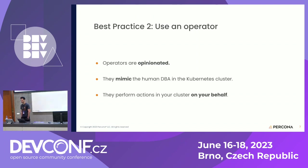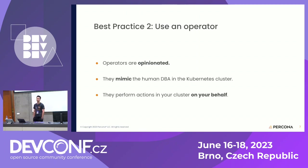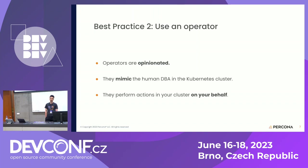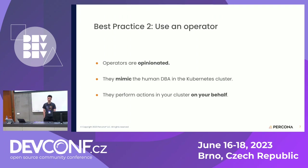You could argue every software is opinionated, and I think that's correct. But in Kubernetes, which is a declarative environment, most of the actions operators take happen in the background — it's not like you're running commands and getting output. The operator is in your cluster, working on your behalf, essentially trying to mimic a human DBA inside the Kubernetes cluster. So it's very important to understand the opinions of your operator, so you can trust that at night your cluster is in good hands.